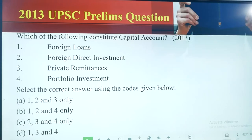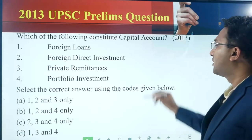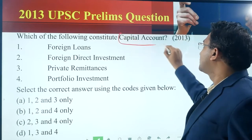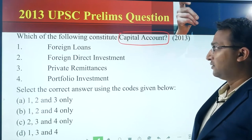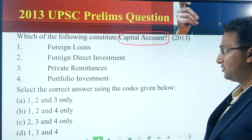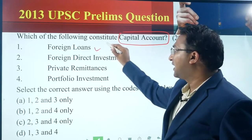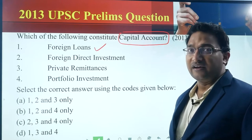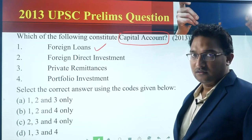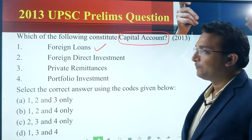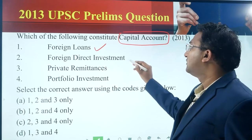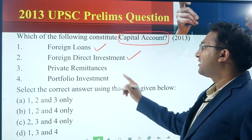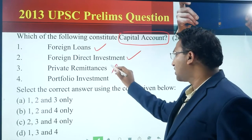Which of the following constitute the capital account? One: foreign loans — this is part of the capital account; examples include external commercial borrowings, trade credit, short-term credit, etc. Two: FDI — this is part of the capital account. Three: private remittances — this is part of the current account.